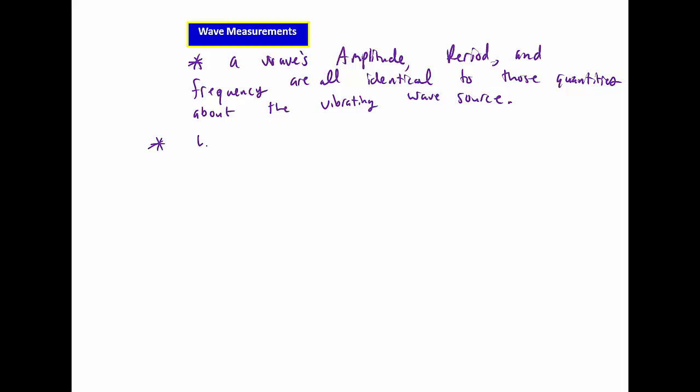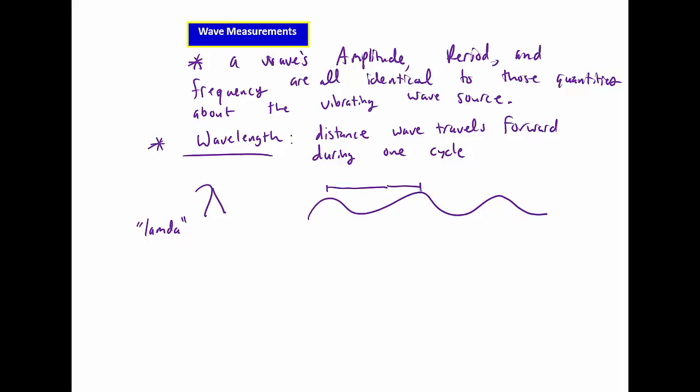So let's talk a little bit about your wavelength. Wavelength is defined as the distance that my wave can travel during just one cycle. So the distance wave travels forward during one cycle. And so the symbol for wavelength is lambda. And if I look at my little wave here, I can go crest to crest or peak to peak, trough to trough. I can go to the middle, to the next middle. Basically, one cycle is going to be our wavelength.